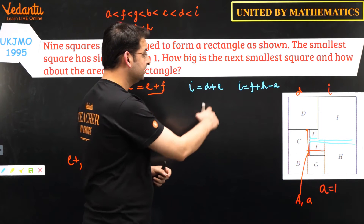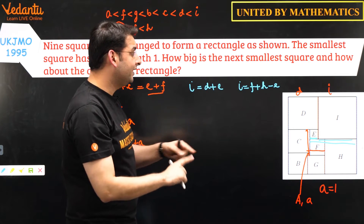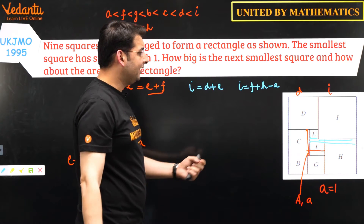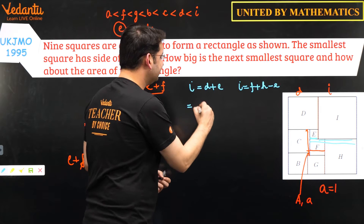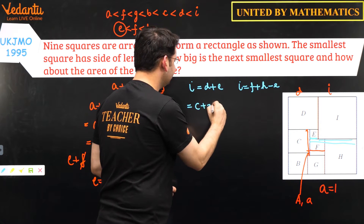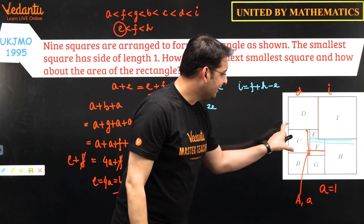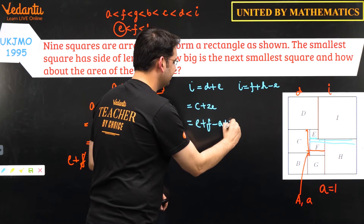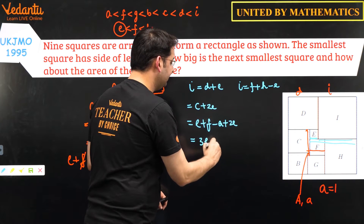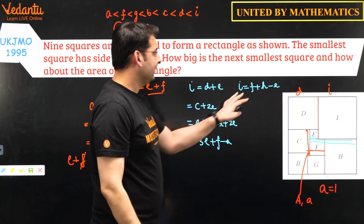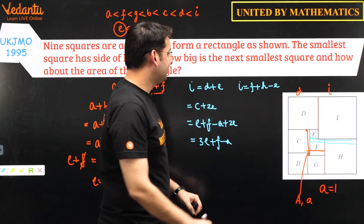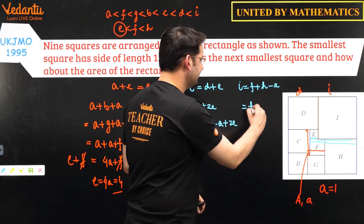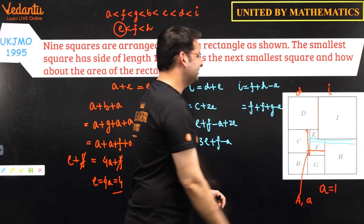We know e and a, so the idea is to find all the square lengths. Substituting d = c + e gives i = c + 2e. And c = e + f − a, so i = 3e + f − a. On the other hand, f + h − e: we eliminate h using h = f + g, giving 2f + g − e. Then substituting g = f + a gives 2f + f + a − e = 3f + a − e.